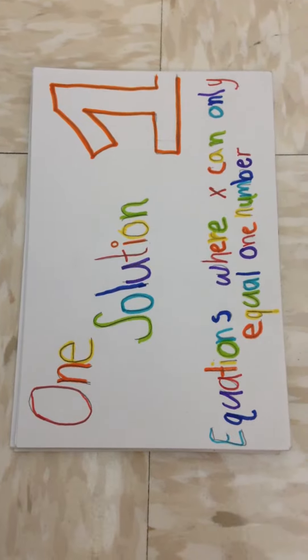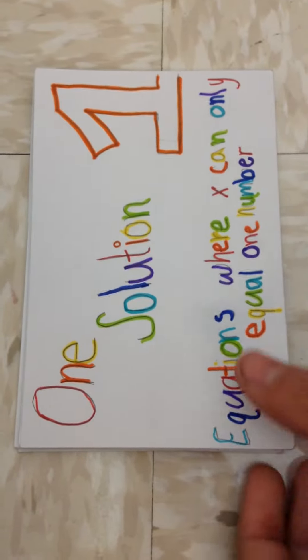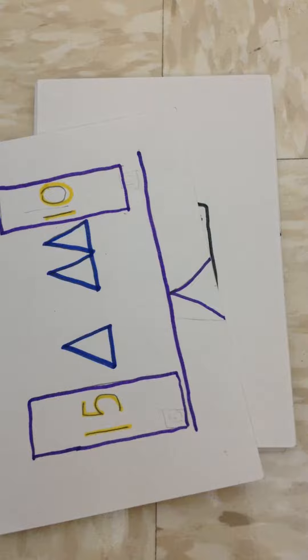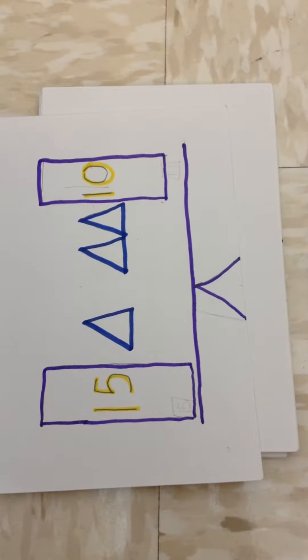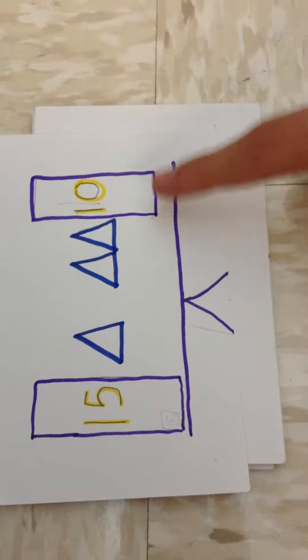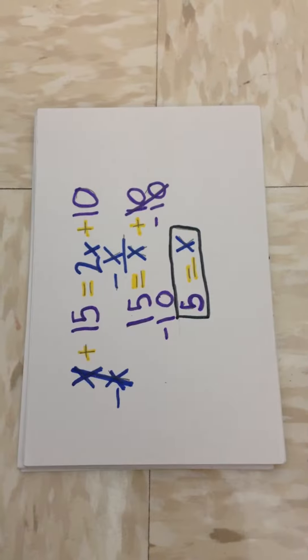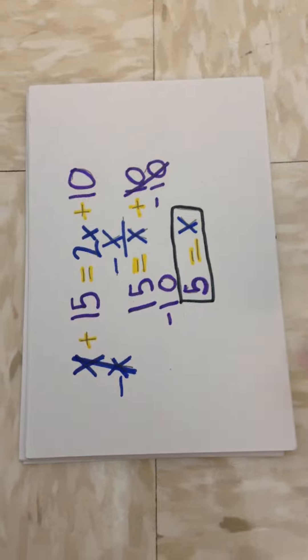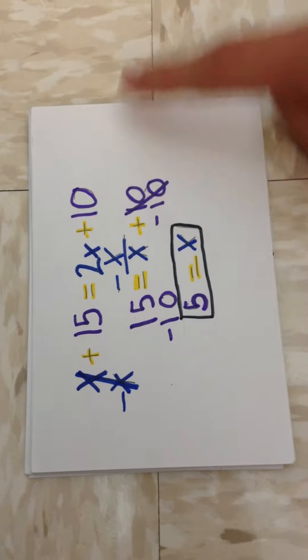One-solution equations, where x can only equal one number for the equation to work. This is a picture example of a one-solution equation, and we have 15 plus x on that side, and 2x plus 10 on that side. And here's the actual equation for that. x plus 15 equals 2x plus 10.